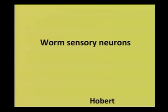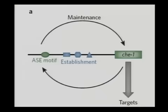Is this general picture true? Hobart has shown that in sensory neurons of the worm, once you start reading this key gene, it feeds back towards itself, and now it goes and turns on its targets, and you're fully differentiated. If you interfere with key-1, the differentiation goes away. So that's exactly like the picture we just said.